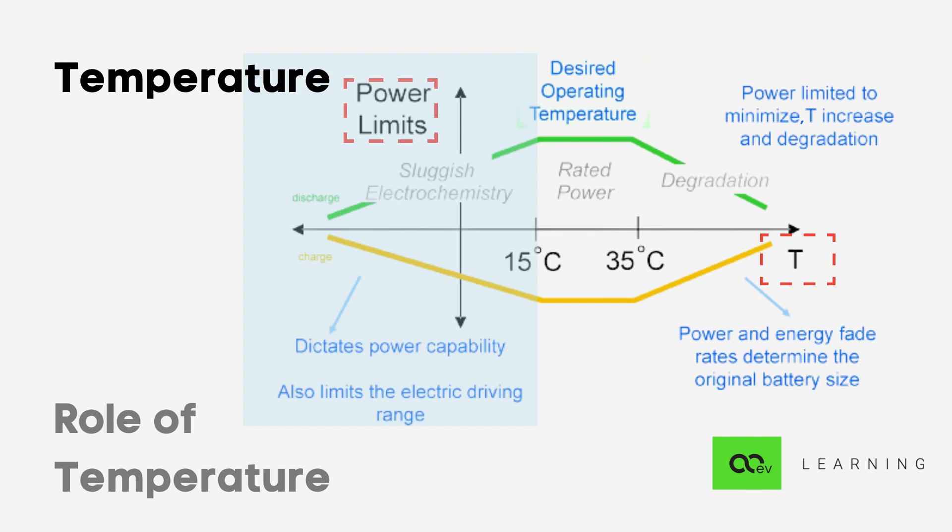Beyond 35 degrees the rate of degradation becomes very fast. That means your cycle life will come down drastically. So we always try to run the battery pack between 15 to 35 degrees Celsius.